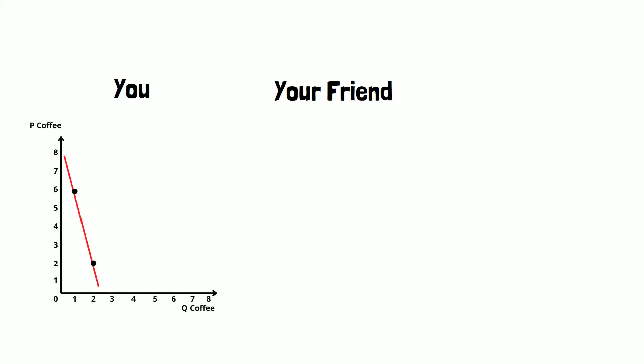On your screen, you can see the demand for coffee. On the y-axis you have the price of coffee and on the x-axis we have the quantity of coffee you consume. You can see that when the price is $6, you consume 1 coffee. When the price is $2, you consume 2 coffees.